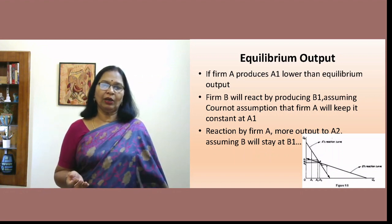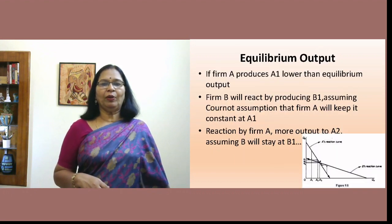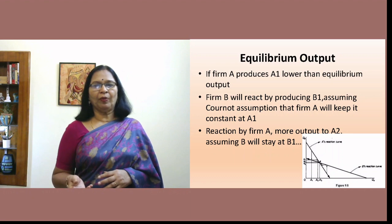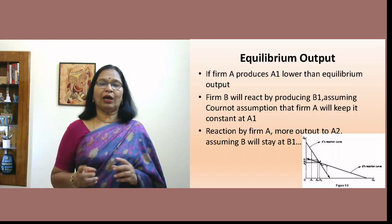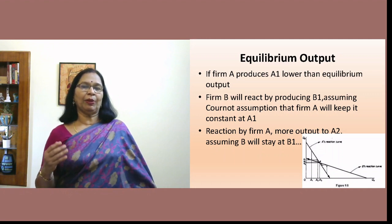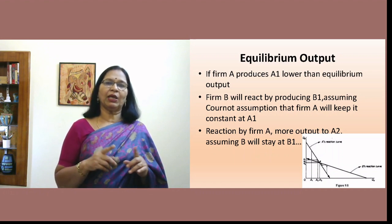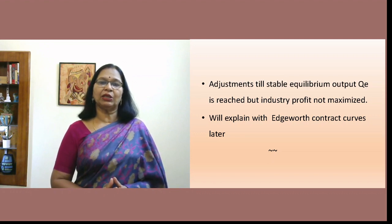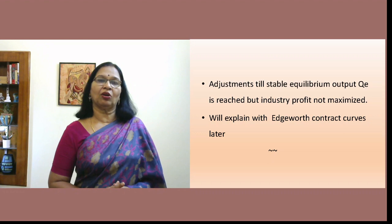If firm A produces A1 — lower than the equilibrium output — firm B will react by producing B1. In response, firm A may increase output, prompting firm B to adjust again, and so on. Both firms continuously adjust their output until they reach the equilibrium point. This is the same process shown numerically in the original Cournot model, now illustrated via reaction curves. The adjustments continue until the stable equilibrium output QE is reached, though industry profit is not maximized — a point explained by the contract curve model.